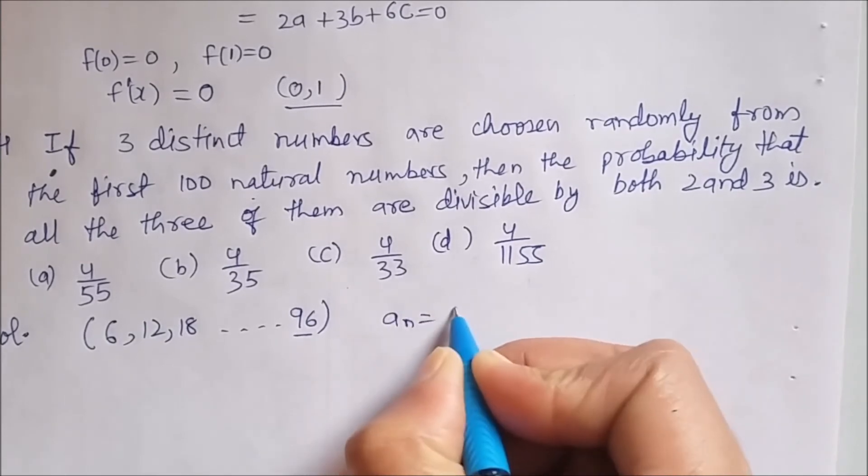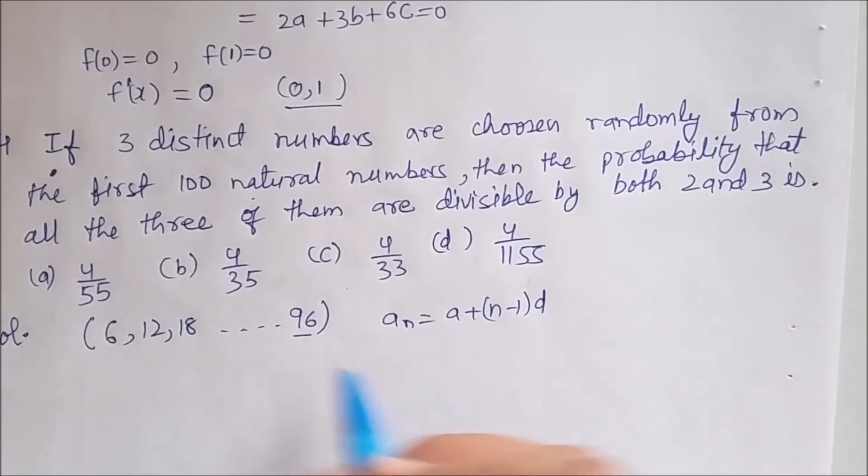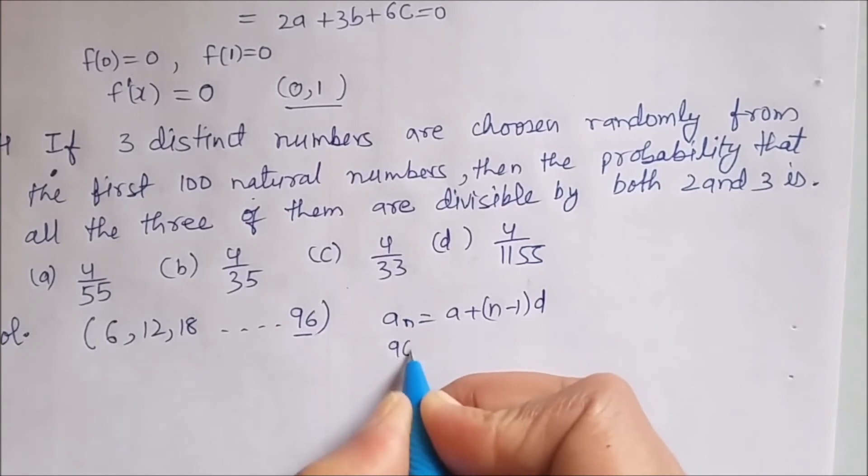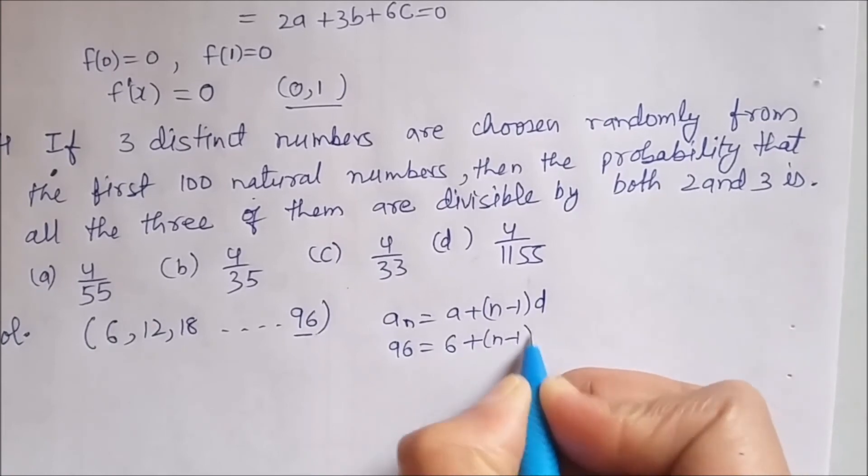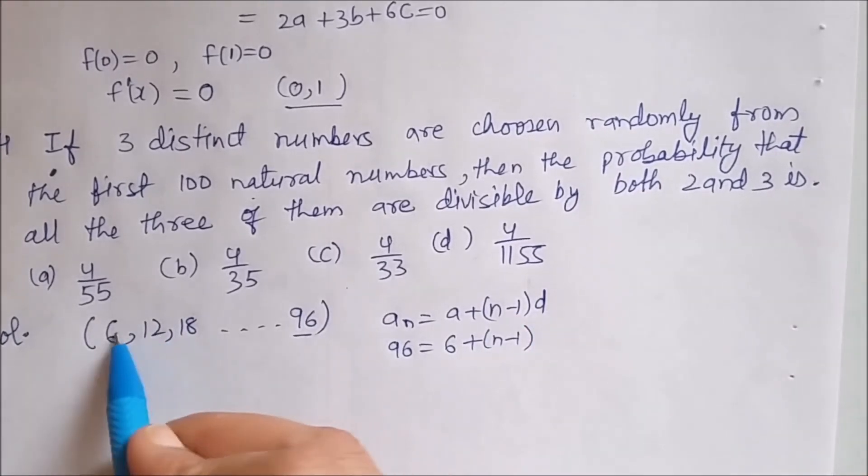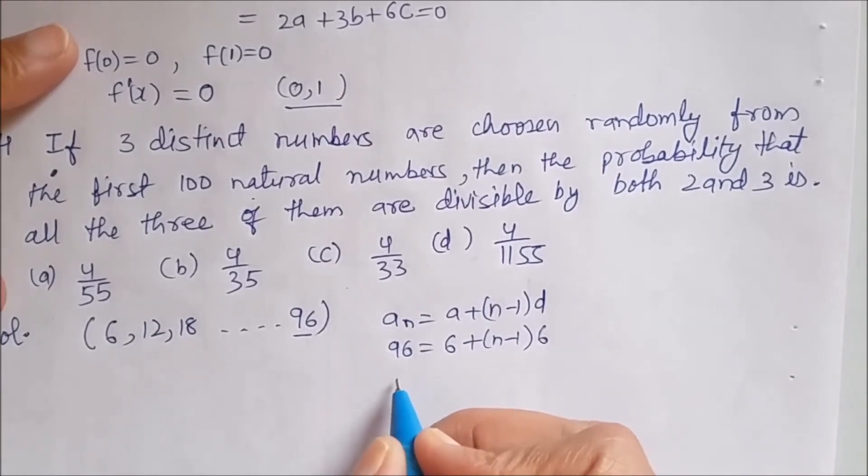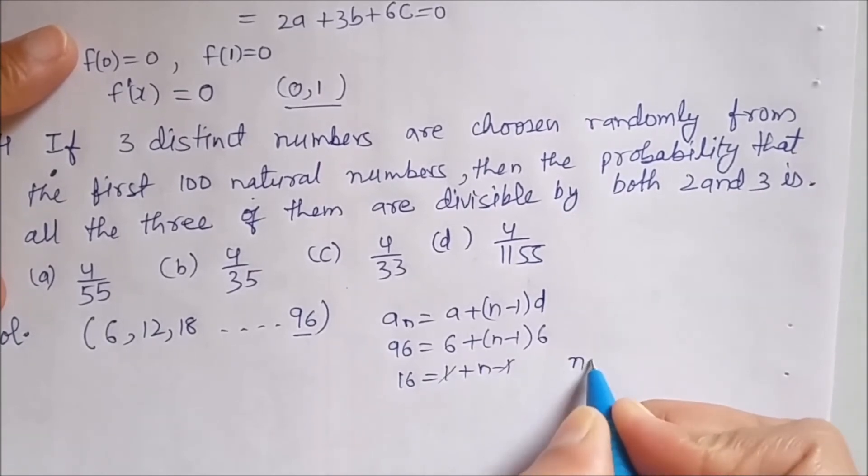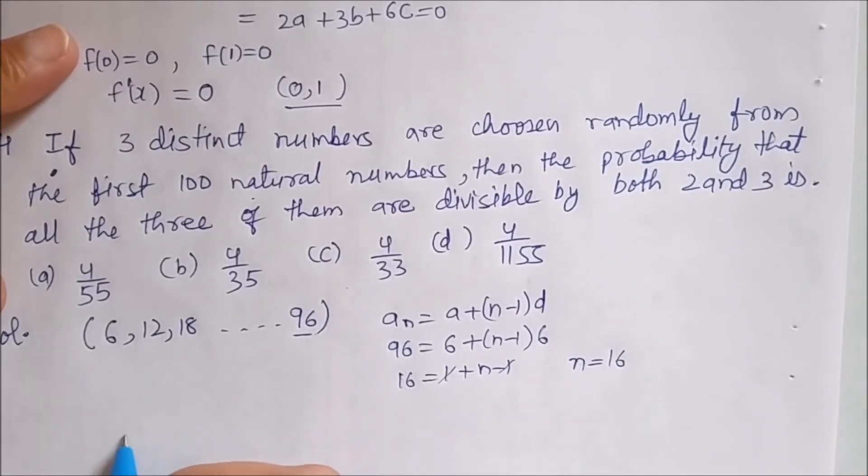Now let us see how many numbers are there. So this number is aₙ. aₙ = a + (n-1)d. This is a formula for AP. As we can see that all these numbers are in AP. So aₙ this is 96 = 6 + (n-1) × d. d is the common difference. That is 12 - 6. This is 6. So if we divide this whole equation by 6, I will get 16 here. This will be 1 + (n-1). So this 1 and 1 will go. And n will come out to be 16. So these are 16 numbers.